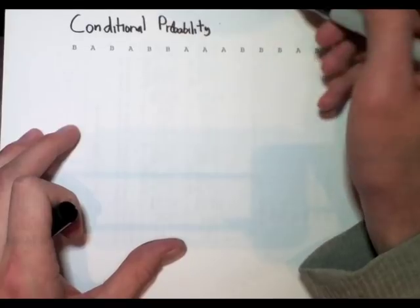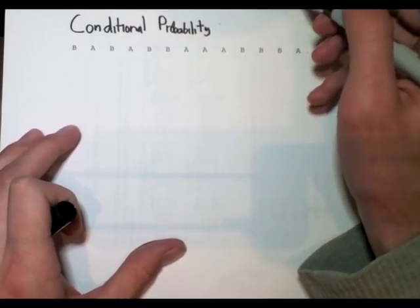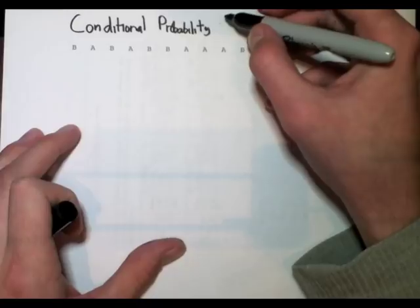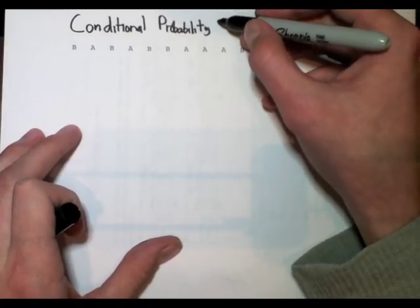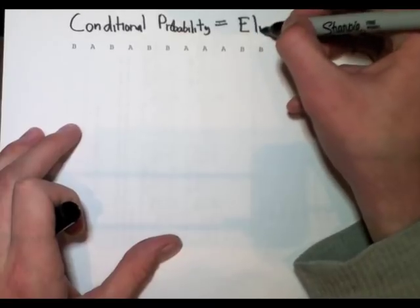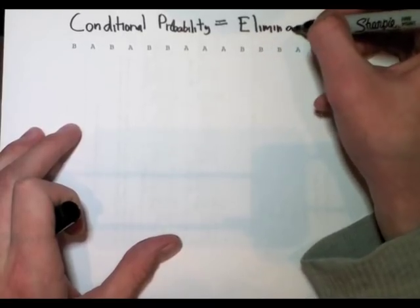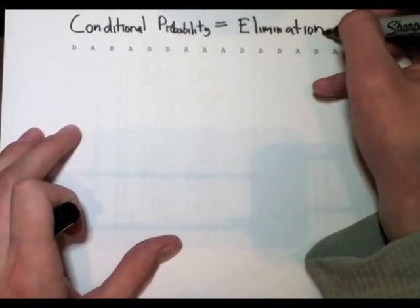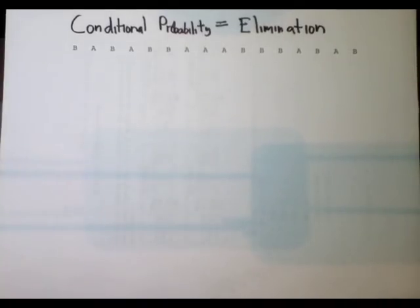Make sure I'm spelling it right. So here's the trick. Whenever you hear conditional probability, or whenever you hear given something or other, which is a code word for conditional probability, whenever you hear that, you think, what can I eliminate? So conditional probability is elimination.